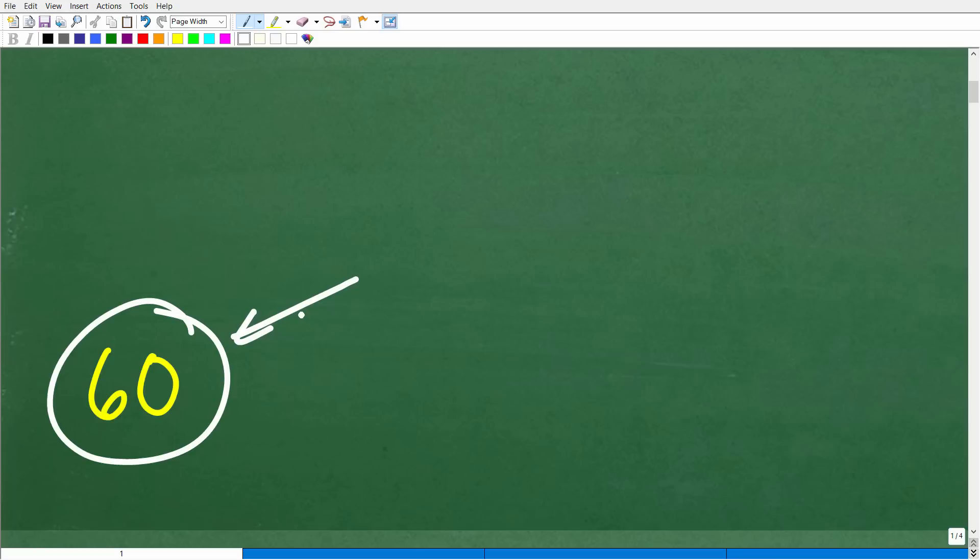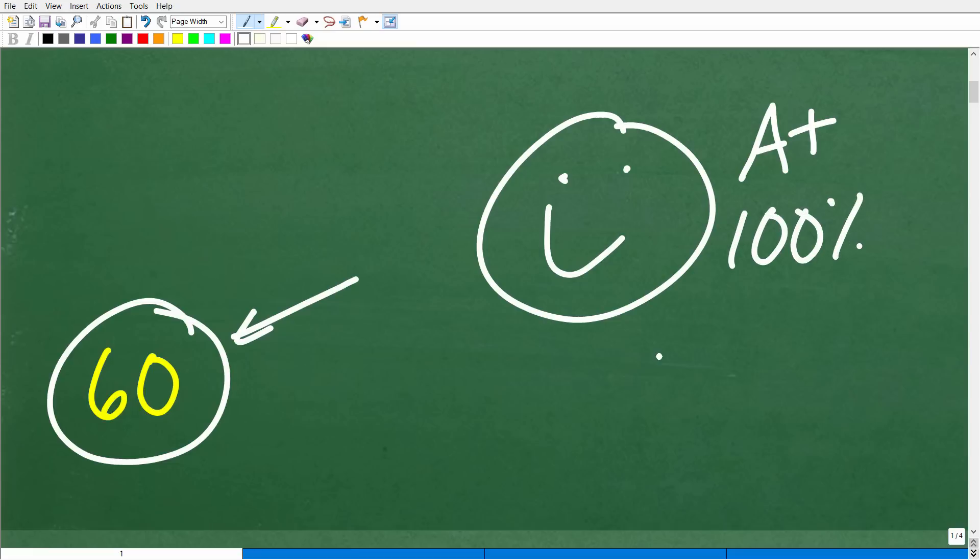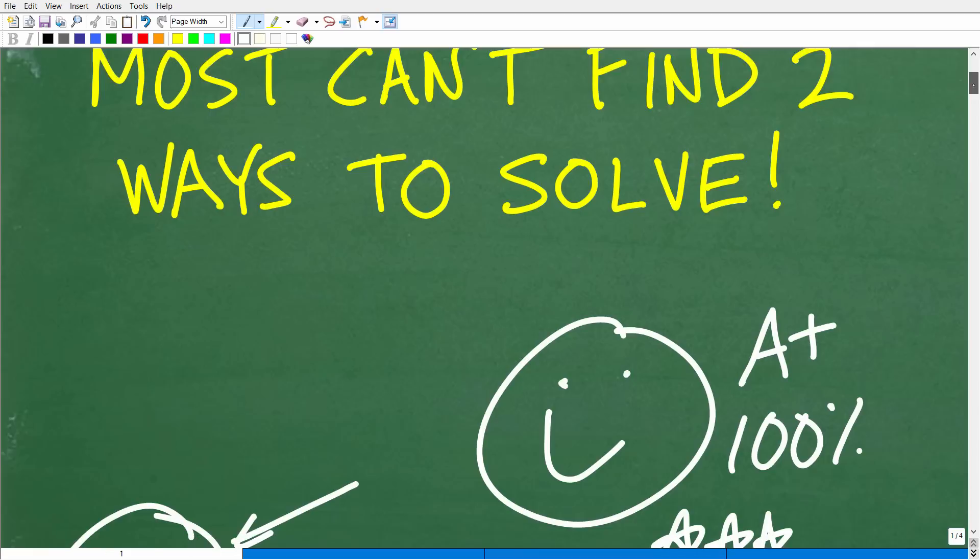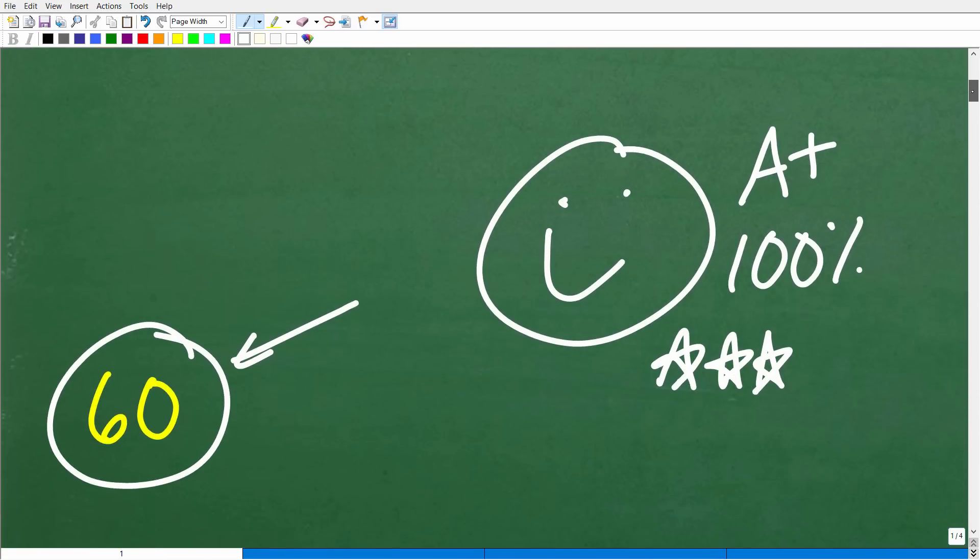All right, so if you got that right, that is fantastic. Again, I'm not judging whether you did it the easy way, hard way, or whatever method. The bottom line is if you didn't use a calculator and you got 60, that is definitely cause for celebration. So let's go ahead and give you a nice little happy face, an A plus, a 100%, and multiple stars. So you can brag to your friends and family that, indeed, you are a certified professional expert in the area of powers and exponents.